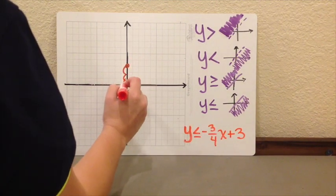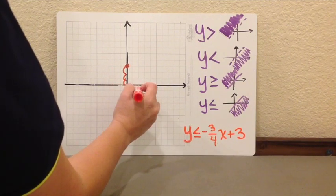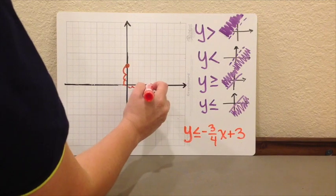1, 2, 3. And then 4 to the right. 1, 2, 3, 4. Now I am here.